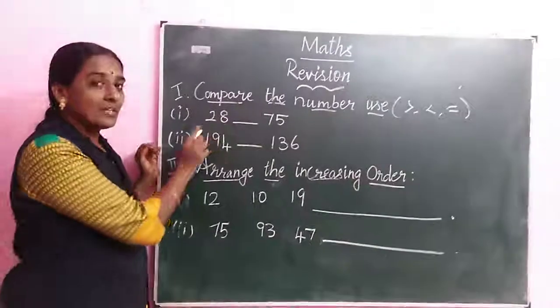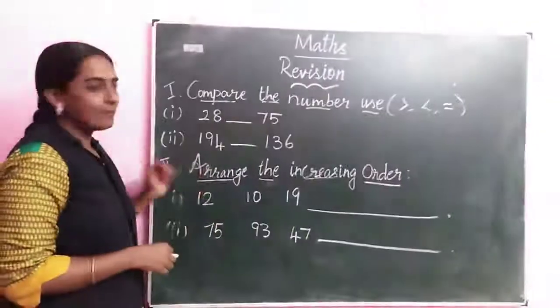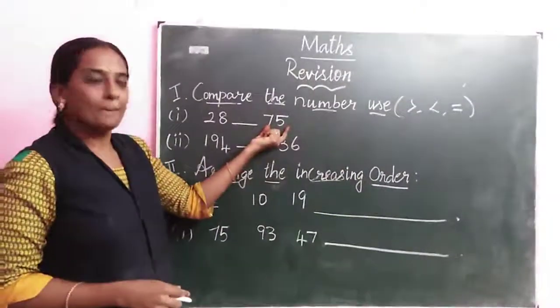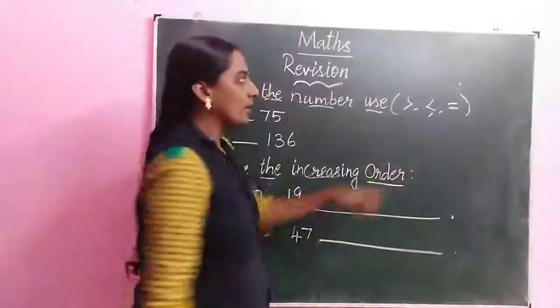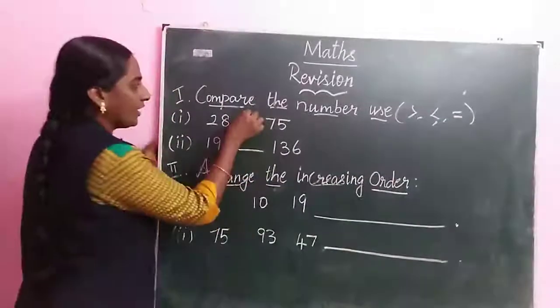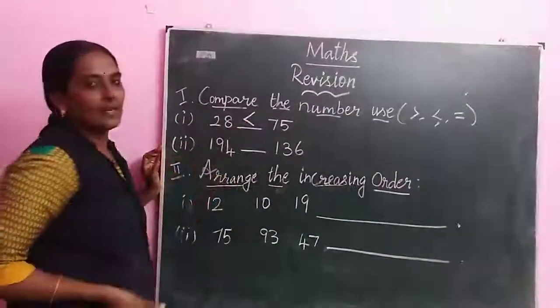28, 75. Now, is 28 a big number or 75 is a big number? 75 only, big number. So we are using which symbol? This one for less than.